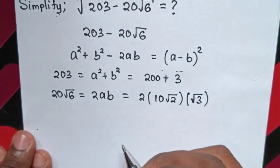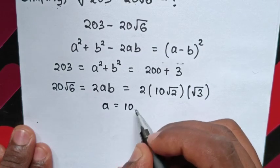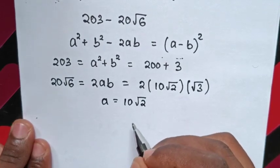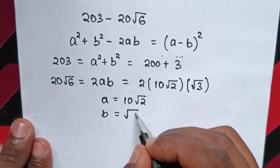Now we already know the value of a, which is equal to 10 square root of 2, and the value of b is equal to square root of 3.